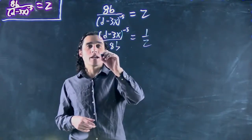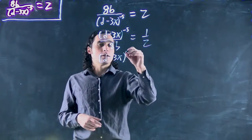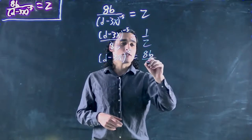Or we can multiply both sides by 8b. So (d - 3x) to the minus 5 is equal to 8b all over z.